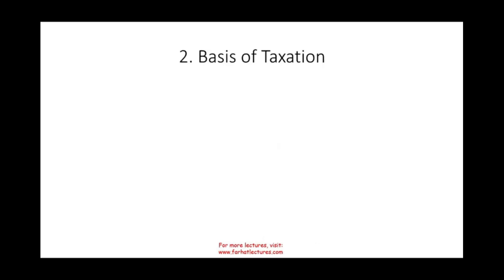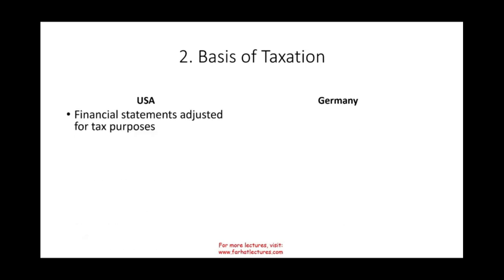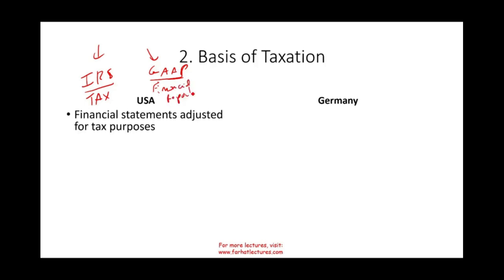Basis of taxation is another reason accounting rules differ from country to country. Different countries are taxed differently. To illustrate the point, let's use the US and Germany. In the US, we have two sets of books: one for the IRS and another for GAAP — generally accepted accounting principles. When we prepare financial statements, one follows GAAP for financial reporting and one follows IRS rules for tax. They differ, not 100%, but substantially in certain rules.